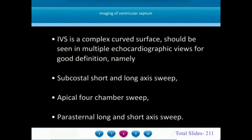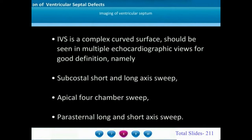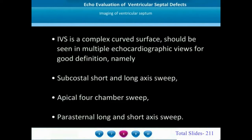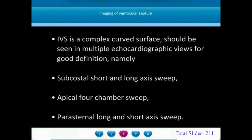Imaging of the ventricular septum, which is a complex curved surface, requires careful assessment using multiple echocardiographic planes to define the location and extent of ventricular septal defects. The commonly used views are subcostal short and long axis sweeps, apical four-chamber sweeps, and parasternal long and short axis sweeps. After assessment in all these planes, we can recreate an en-face view of the septum and show where the ventricular septal defect is located.